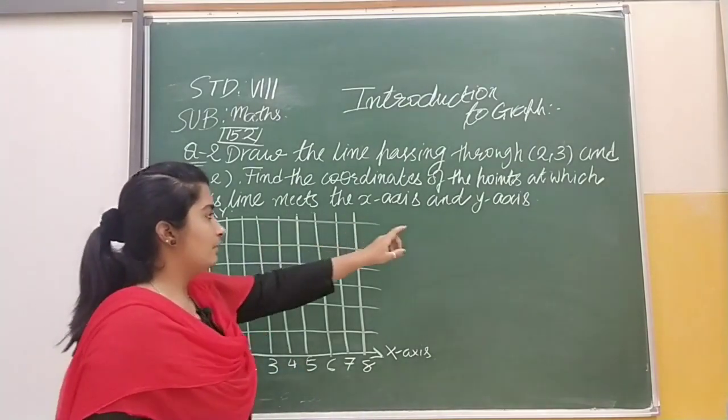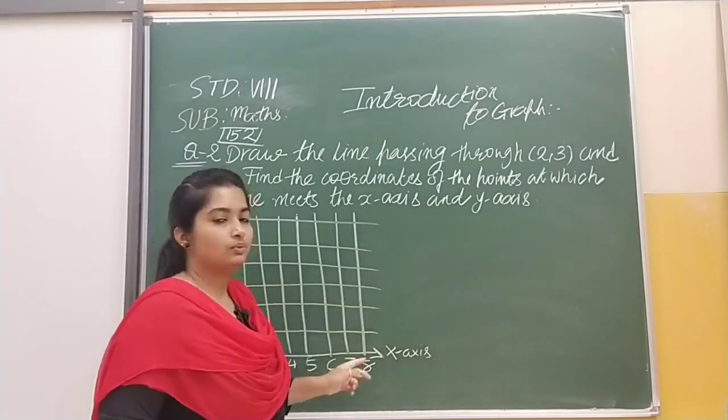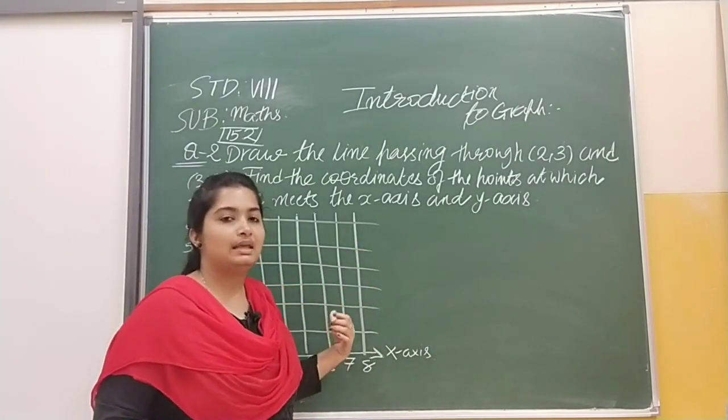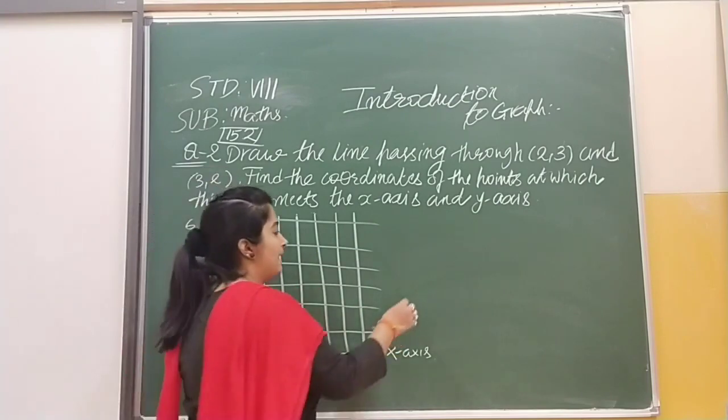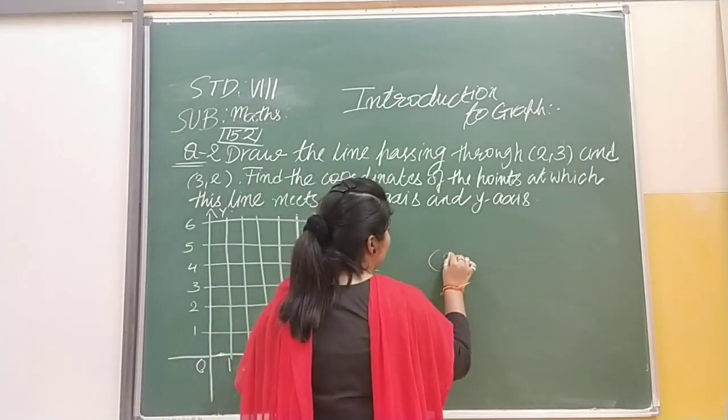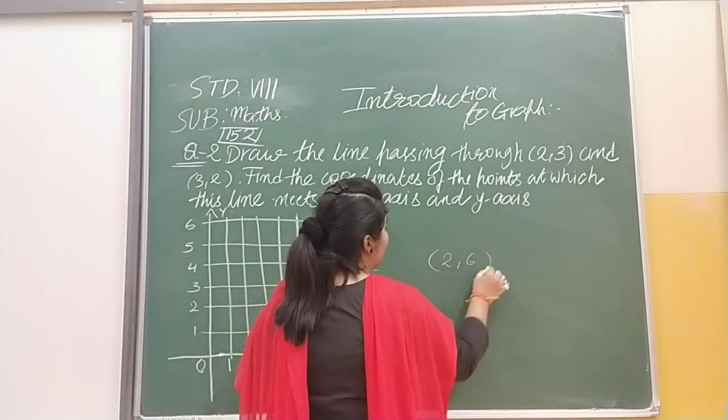Now we have to draw (2,3) and (3,2) - those points we have to put. So our first point that is given here is (2,6). So our first point is of the x-axis.